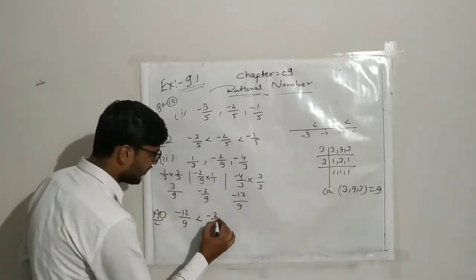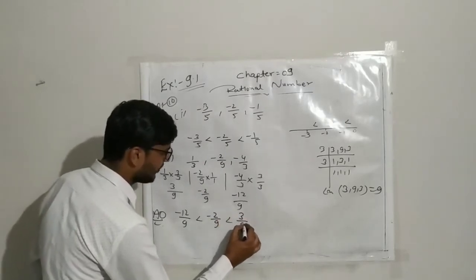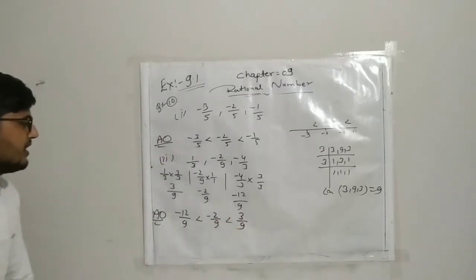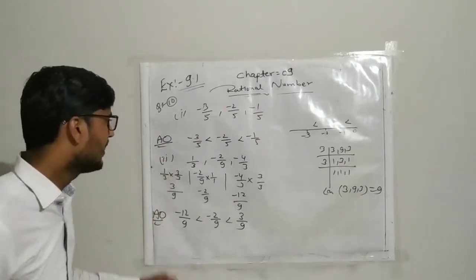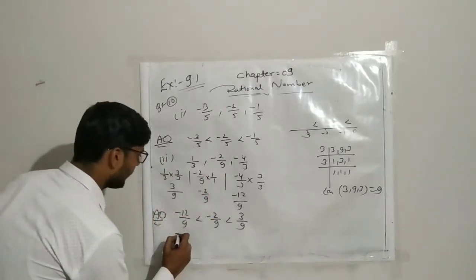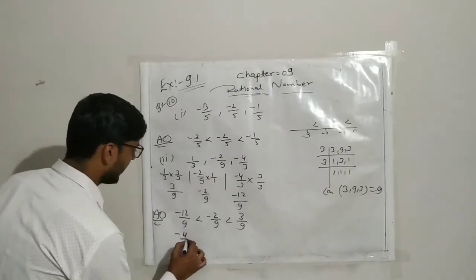So the ascending order is: minus 12 upon 9, then minus 2 upon 9, and then positive 3 upon 9. This is the ascending order of these numbers. Minus 12 upon 9, which is minus 4 upon 3.